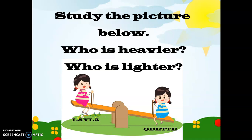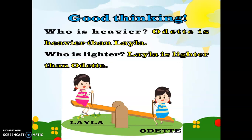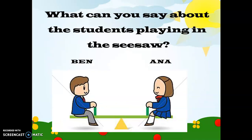Let's study the picture below. Who is heavier and who is lighter between the two children? Let's see. Good thinking! Odette is heavier than Lila, and Lila is lighter than Odette. How did we know? By just looking at where the seesaw is directed — the seesaw goes downwards towards Odette, meaning she is heavier than Lila because the seesaw is lifted on Lila's side.